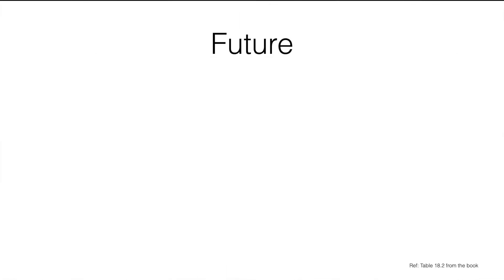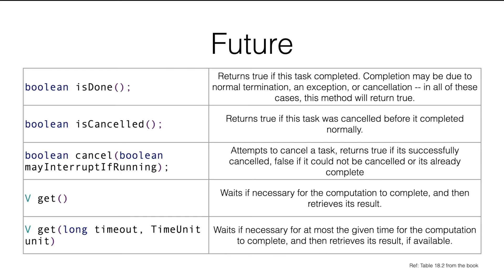Now let's look into the Future object. As I mentioned, the Future object can be used to get more information about a given task. Future is actually an interface. For the exam you don't need to know how the class is implemented, but you need to know what information you can get from a Future instance. The first method is isDone, which returns a boolean — it returns true if the task is completed, whether due to normal termination, thrown exception, or cancellation.